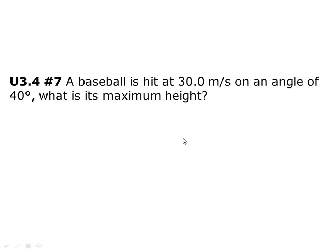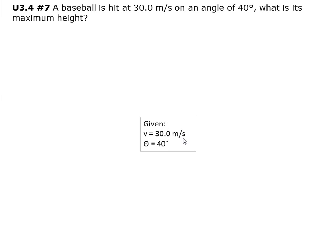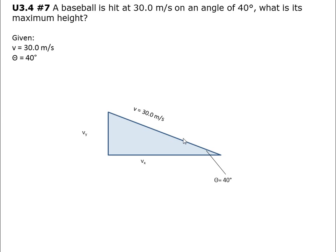A baseball is hit at 30 meters per second on an angle of 40 degrees. What is its maximum height? The given values are: velocity equals 30 meters per second, and the angle is 40 degrees.